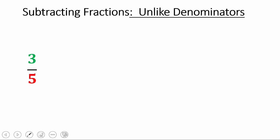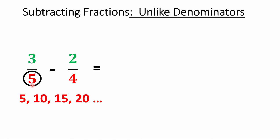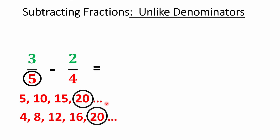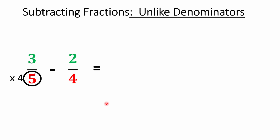Alright, subtracting fractions. We've got three-fifths minus something — it's no different. The only difference is the subtraction sign. Pick the bigger number, circle it, and list its multiples. Then list the other number's multiples and snap your fingers when you get a match. There's the match — it's 20. What does that 20 mean? That's the number we have to turn both fractions into. Times one denominator by four and the other by five, and make sure you do the same to the top.